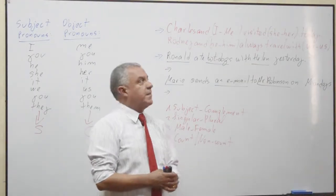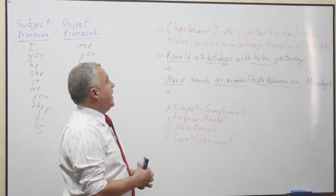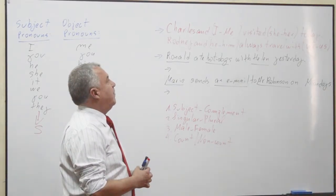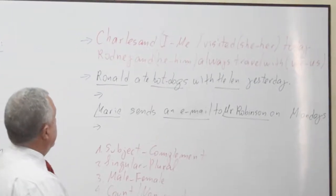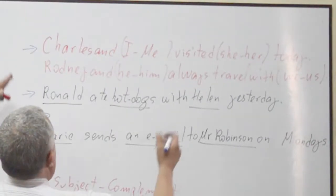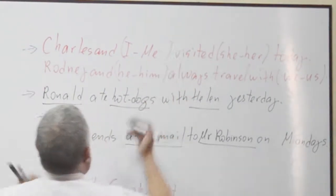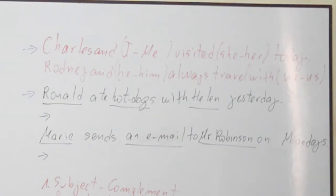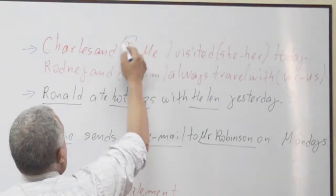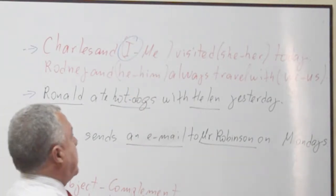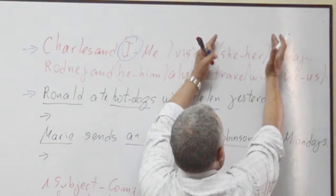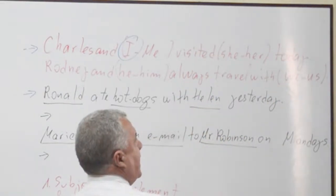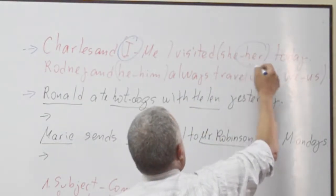Let's do some exercises. Charles and I or me visited she or her today. 'Charles and I' is the subject — in the subject you use subject pronouns, so the answer is 'I'. 'Visited she or her' — there's the complement, and in the complement we use object pronouns, so the answer is 'her'.